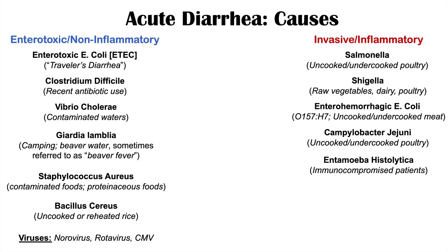Another cause of invasive acute diarrhea is Entamoeba histolytica, a protozoan amoeba. This occurs more often in immunocompromised patients, such as those with AIDS or patients on chronic steroids. Entamoeba histolytica can also cause complications beyond diarrhea, such as liver abscesses.